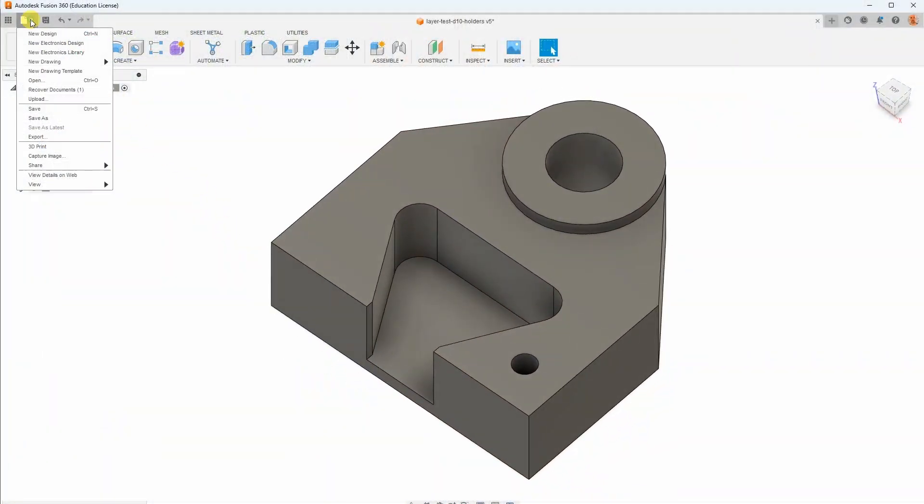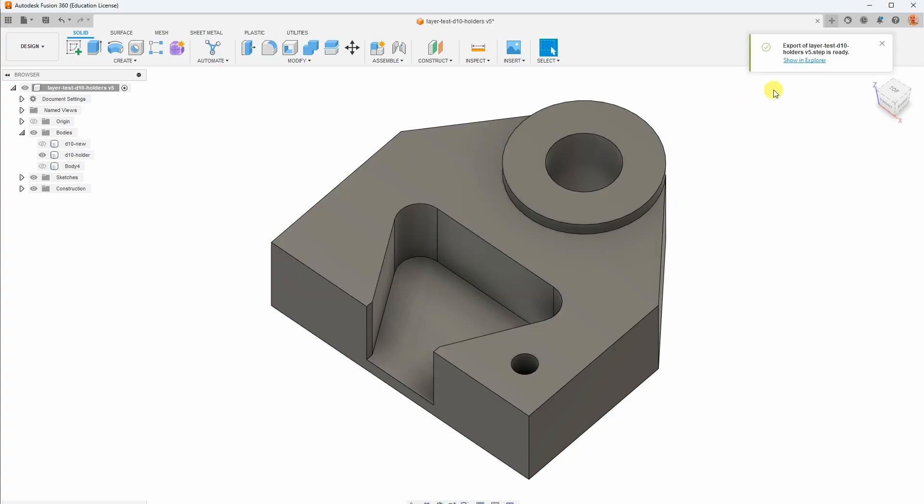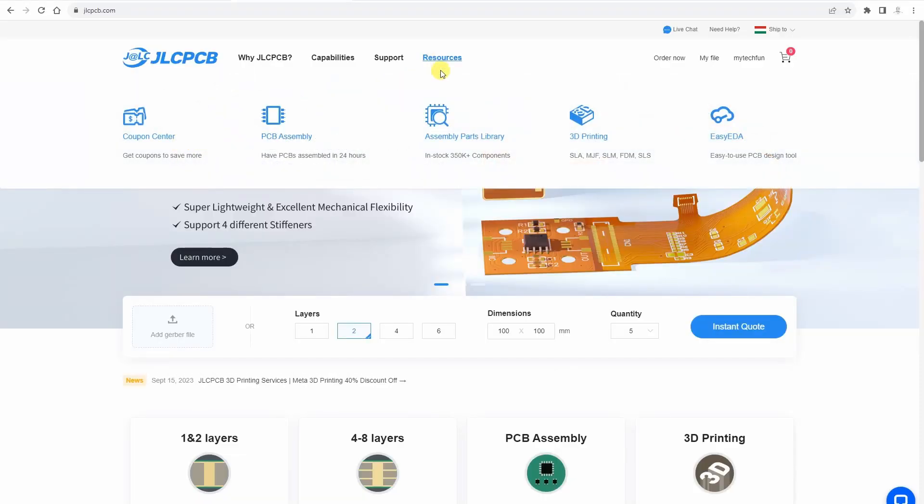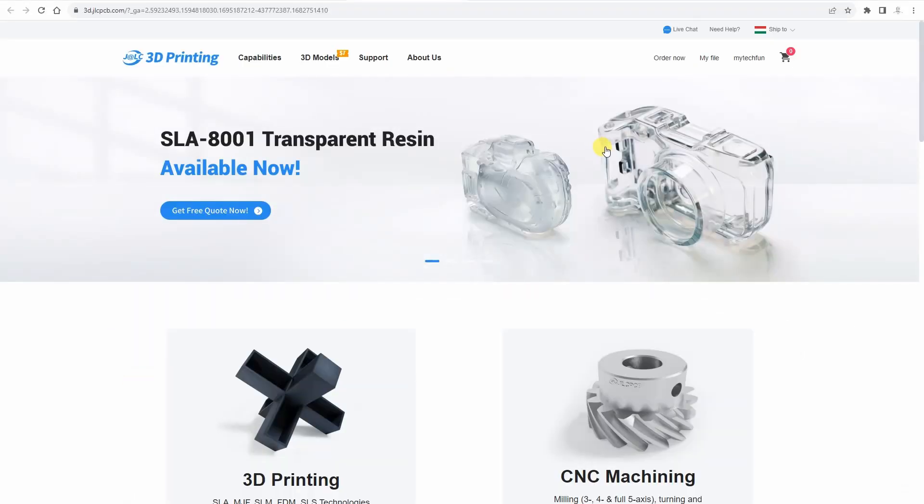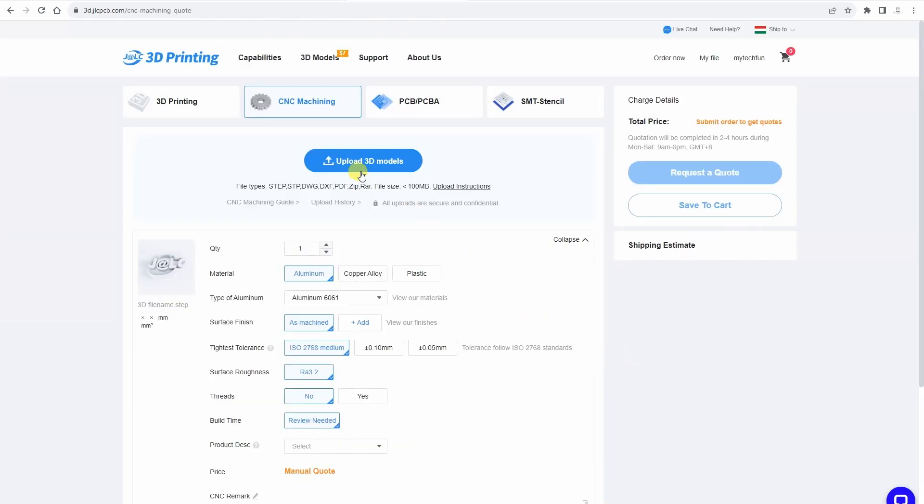The ordering process is very simple, but first you have to prepare a STEP file, not STL. It can be exported from Fusion 360 for example. The next step is on their website. We have to go to resources, choose CNC machining, and then upload those STEP files.